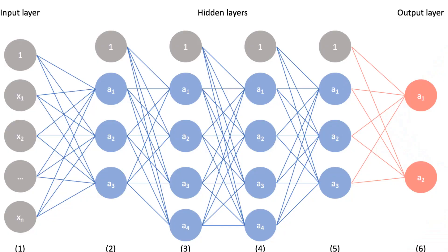There are three key parts of a neural network we need to understand before getting into the math and programming. First, the input layer — all of our input variables. Second, the hidden layer — where the neural net discovers what type of interactions the variables are having with each other. Third, the output layer — where we get our output or prediction.